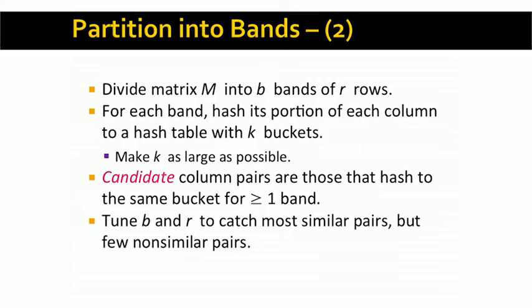Given threshold T, we need to tune B and R so that most similar pairs are 100% similar in at least one band, but few pairs with Jaccard similarity less than T are 100% similar in any band. The only constraint is that B times R must equal the length of the signatures. Intuitively, if we make B large and R small, there are lots of bands and many opportunities for a pair to wind up in the same bucket, since the band width R is small. Making B large is best if the similarity threshold is relatively low.